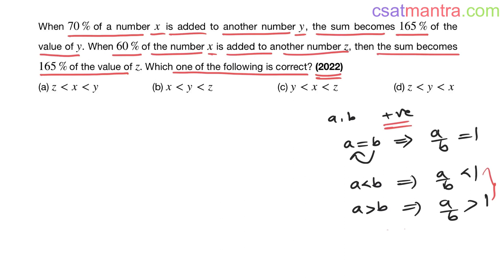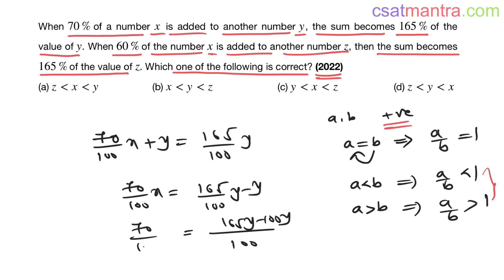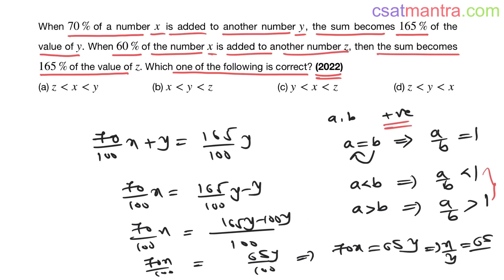Now, 70% of x — that is 70/100·x — is added to y, and the sum becomes 165% of y. So: 70/100·x = 165/100·y − y. Taking LCM of 100: 70/100·x = (165y − 100y)/100 = 65y/100. Therefore, 70x = 65y, which gives x/y = 65/70.